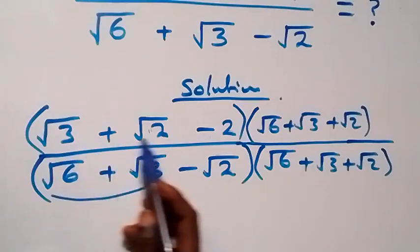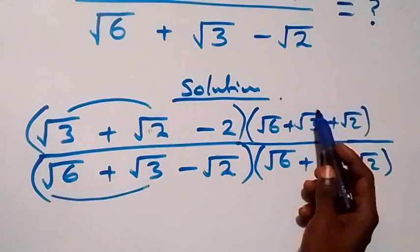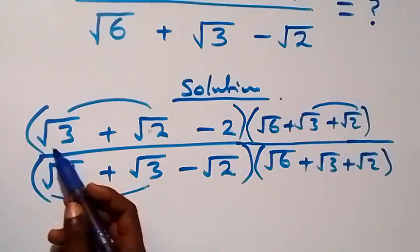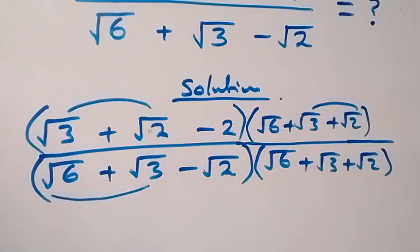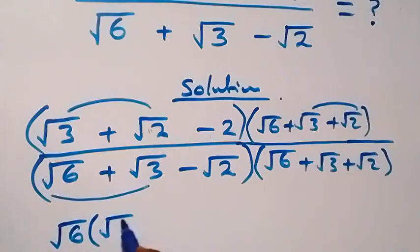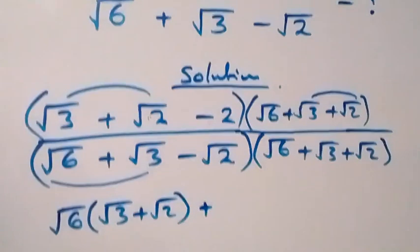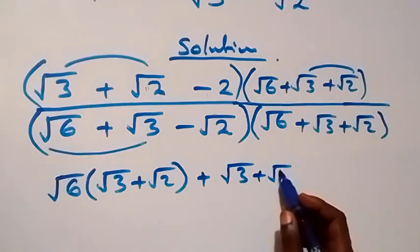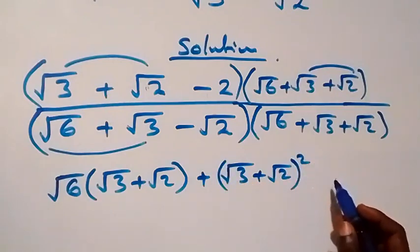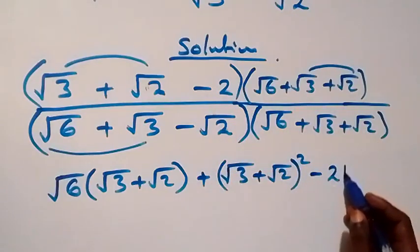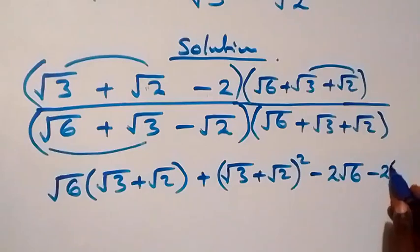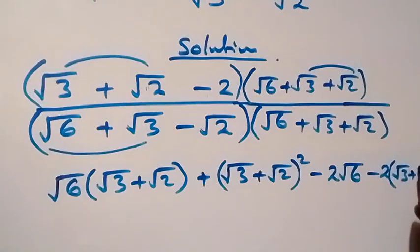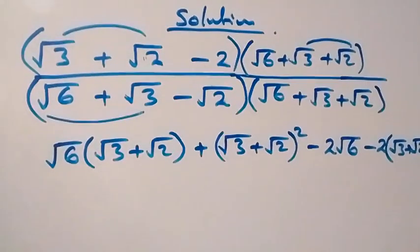Let's group (√3 + √2) together in the numerator. We use (√3 + √2) to expand first. We have √6 into bracket (√3 + √2), then plus (√3 + √2) all squared, then minus 2 open bracket (√3 + √2) close bracket.